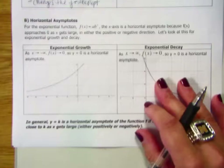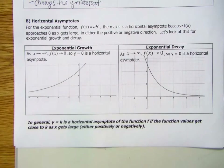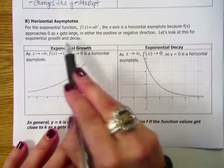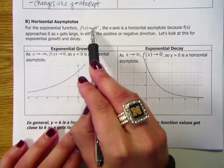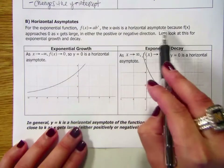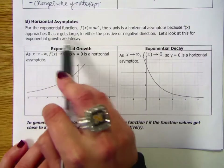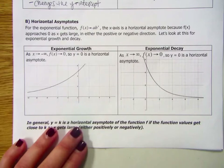The next thing we are going to look at with exponential functions are horizontal asymptotes. We've talked a little bit about what asymptotes are — you talked about it in Algebra 2. These are lines that graphs approach but never reach. In general, for your exponential function f(x) = A·B^x, the x-axis is a horizontal asymptote because f(x) approaches 0 as x gets large in either the positive or the negative direction.